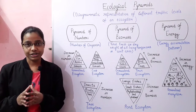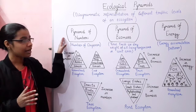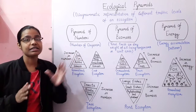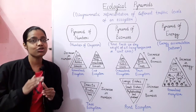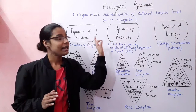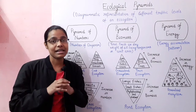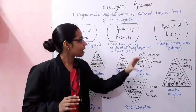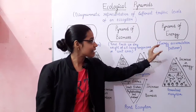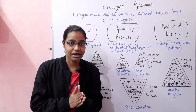There are three types of ecological pyramids. The first one is the pyramid of number, which indicates the number of organisms present in each trophic level. The second is the pyramid of biomass, which indicates the biomass of individuals in each trophic level. The third is the pyramid of energy, which indicates the energy accumulation pattern within each trophic level of the ecosystem.